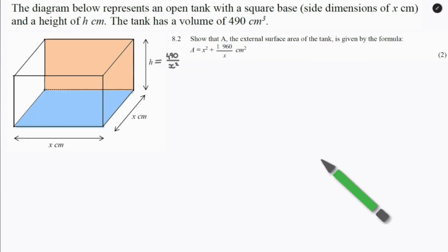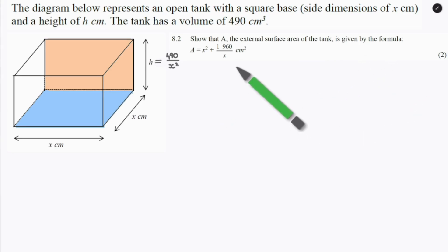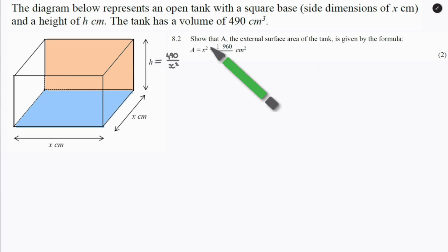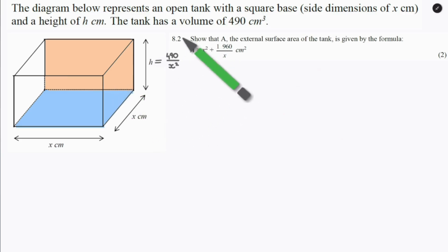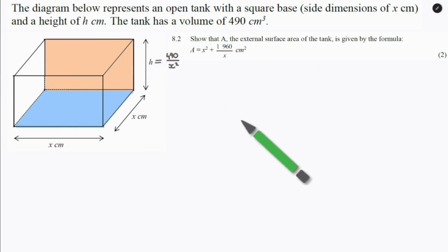Next up, we need to show that the external surface area of the tank is given by the following formula. We have to show how they get it — because the question says 'show'. Looking at this tank, they said it's an open tank, so we are not going to consider the top face. That means we have only five faces to worry about.